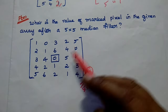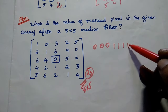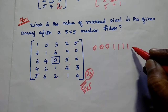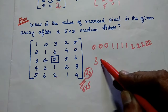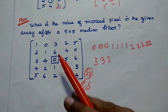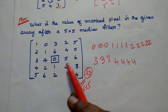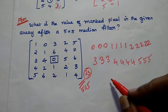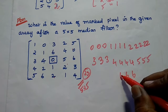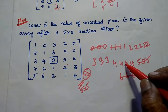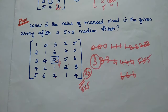To find the median with 25 pixel values, we arrange them in ascending order and take the center (13th) value. Counting from the array: there are 3 zeros, 4 ones, 5 twos, 3 threes, 4 fours, 3 fives, and 3 sixes. Writing them all in order gives us 25 values, and the 13th value — the median — is 3. So we replace the marked pixel (originally 0) with the value 3.